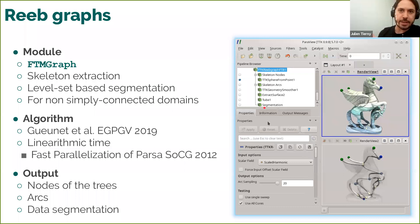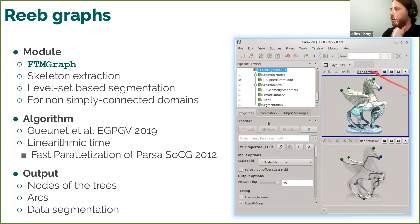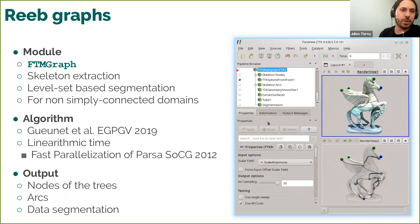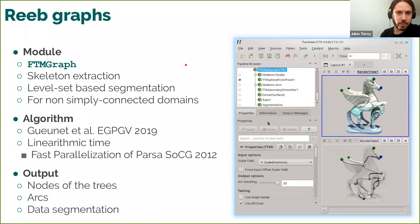When the domain is not simply connected — when it contains handles — the more general notion of the Reeb graph is needed to track the connectivity of level sets. Here is an example with a harmonic function computed on a surface, generating a Reeb graph that has as many loops as the geometric domain has handles. TTK implements an efficient parallelization of an algorithm by Pascucci and Cole-McLaughlin with optimal time complexity. From a user perspective, this module behaves exactly the same as the one for merge trees.